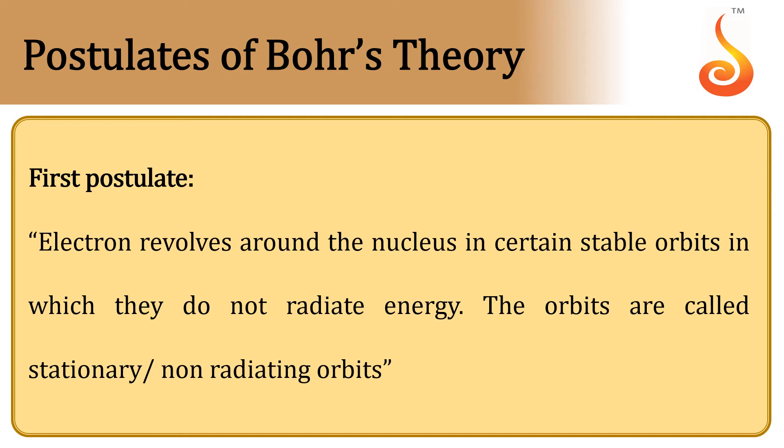Electrons revolve around the nucleus in certain stable orbits in which they do not radiate energy. These orbits are called stationary or non-radiating orbits.